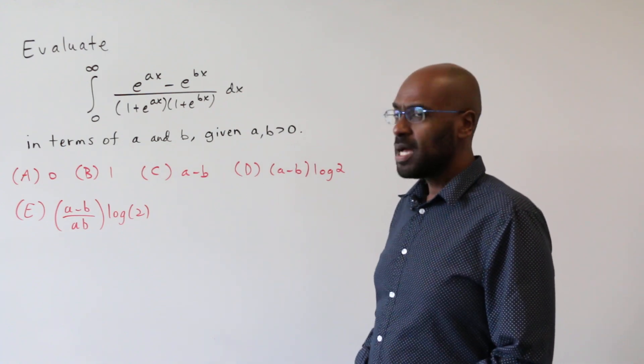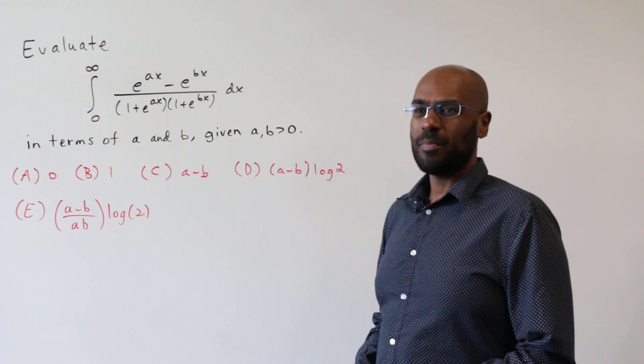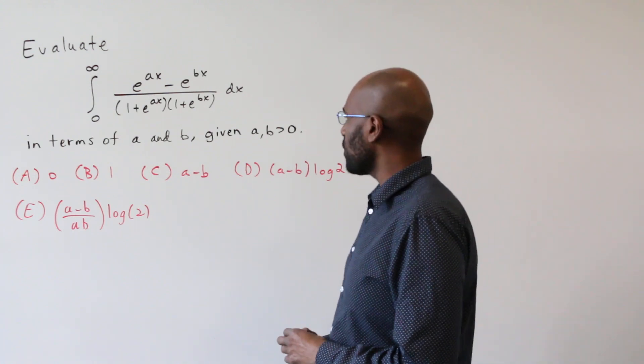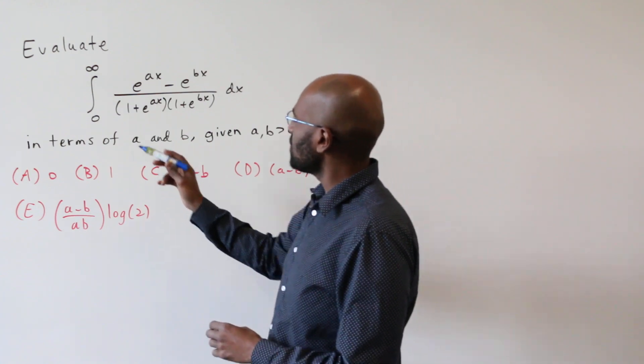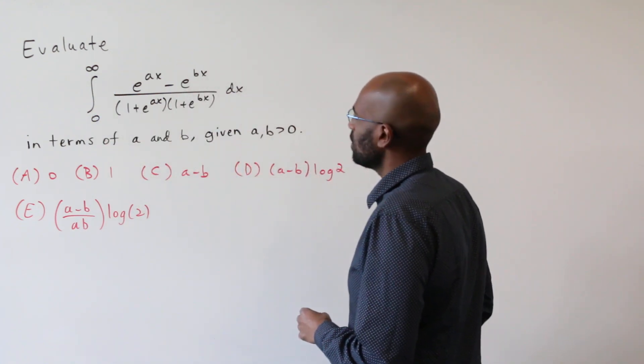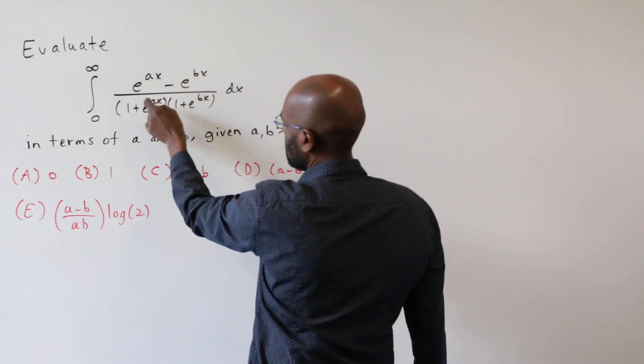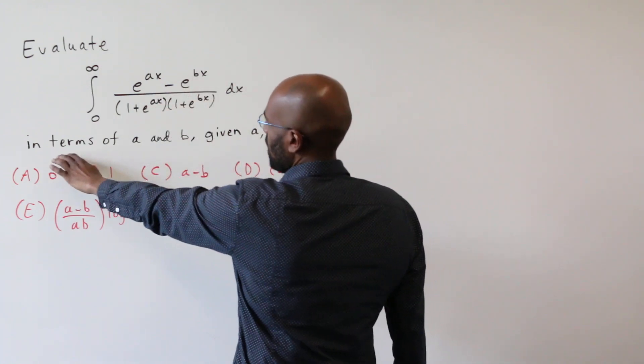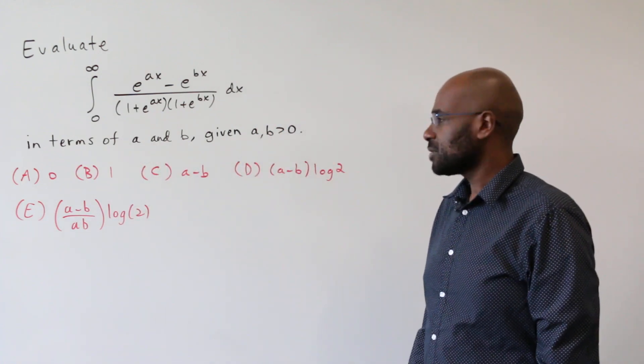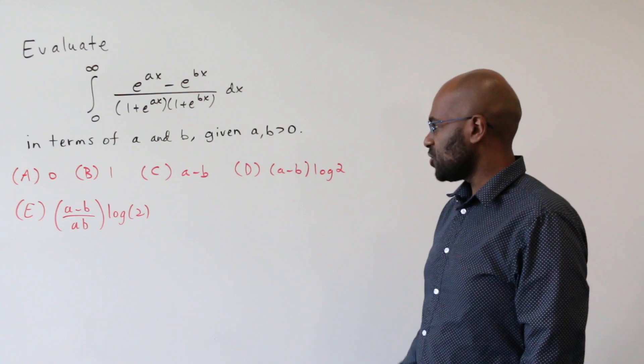We actually have the answers to the question here and it's a quite complicated integral that about a third of contestants were able to actually solve correctly. The question is to evaluate the integral from 0 to infinity of this expression here, which is a function of x but has these constants a and b everywhere, and you want to evaluate in terms of a and b, given that a and b are positive numbers.